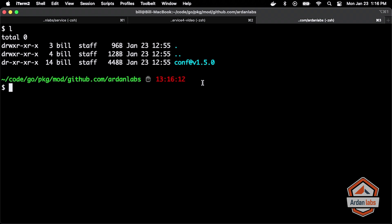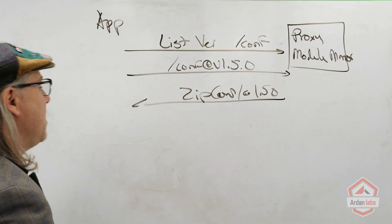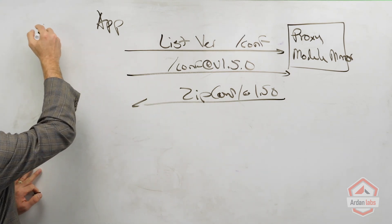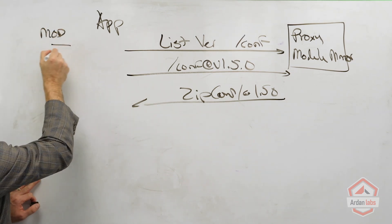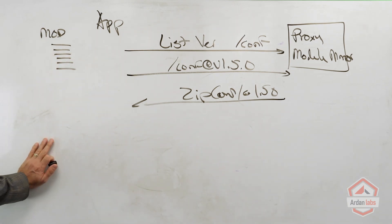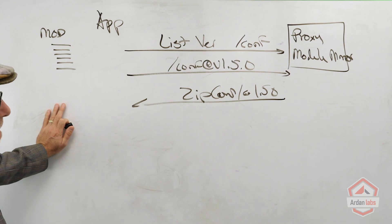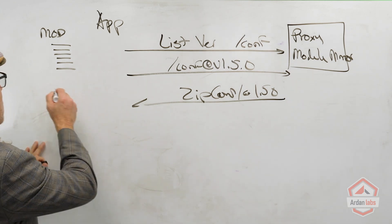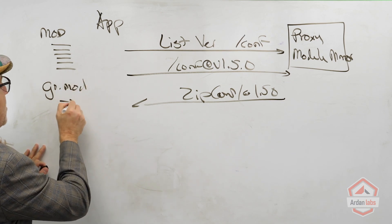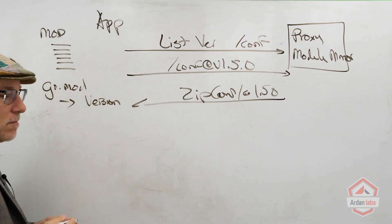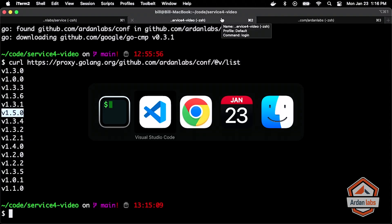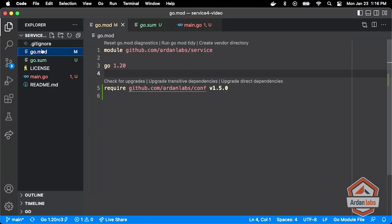That zip file was then extracted and all the code got created in the go module cache. We go to the mod cache, unzip all the source code out of that file, and then write to go.mod that we got that version. And we see that in the project.